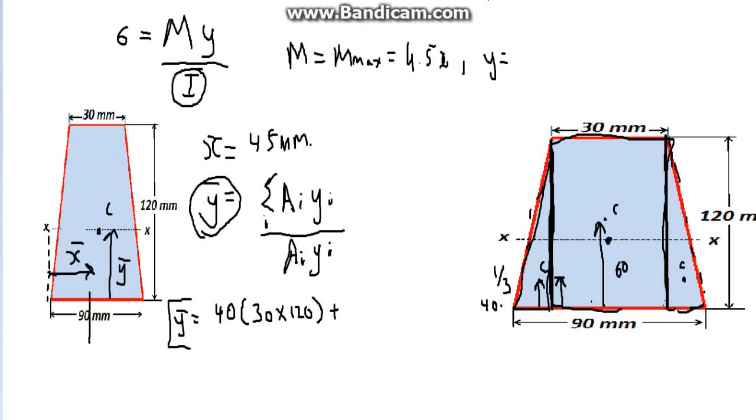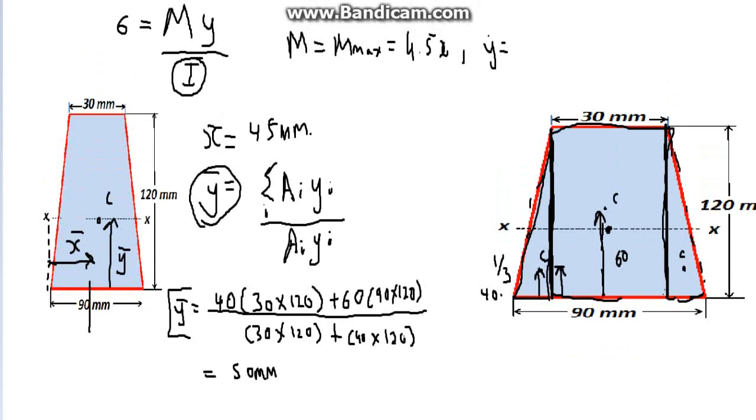So plus the distance to get to this rectangle, which is 60 multiplied by its area of 90 times 120. The whole thing divided by the total area, 30 times 120 plus 90 times 120, which then equals 50 millimeters. So that Y-value we just worked out is Y-bar equals 50 millimeters.